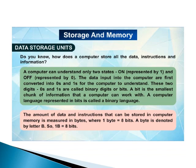Do you know how a computer stores all the data, instructions, and information? A computer can understand only two states: on and off. On is represented by 1 and off is represented by 0. The data input into the computer is first converted into 0 and 1 for the computer to understand. These two digits, 0 and 1, are called binary digits or bits. A bit is the smallest chunk of information that helps a computer to work.